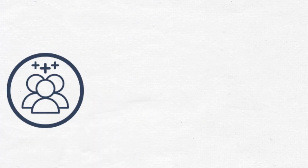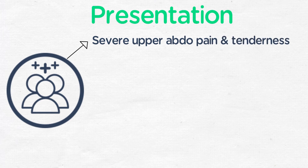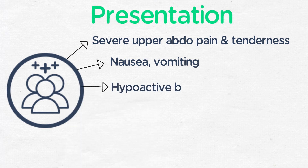Acute pancreatitis classically presents as severe upper abdominal or epigastric pain that radiates to the back, and is often relieved when the patient leans forward. It may be associated with tenderness, often severe tenderness in the upper abdomen on exam. Additional symptoms or signs may include nausea or vomiting, with hypoactive bowel sounds variably present due to a localized ileus.